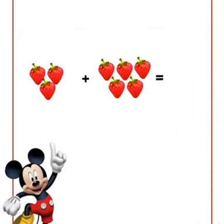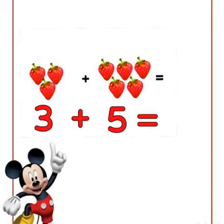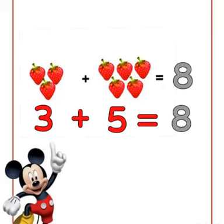Here is the third example. There are three strawberries — one, two, three. Plus, in another group, there are five strawberries — one, two, three, four, five. So, on the whole total, there are eight strawberries. Count with me: one, two, three, four, five, six, seven, eight. There are eight strawberries. So, three plus five is equal to eight.